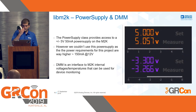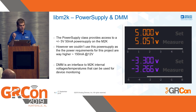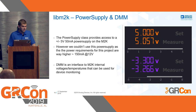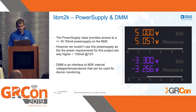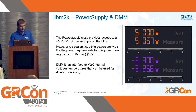The power supply and DMM — Digital Multimeter — classes are the interface to the M2K's power supply, which is a plus/minus 5 volt, 50 milliamp supply. We couldn't use this power supply for this project because our requirements are larger — 12 volts at 150 milliamps — but it's worth mentioning. The screenshot from Scopy shows 5 volts on the positive output and minus 3 on the negative output. The DMM is an interface to the M2K's internal voltages and temperatures and can be used for device monitoring.